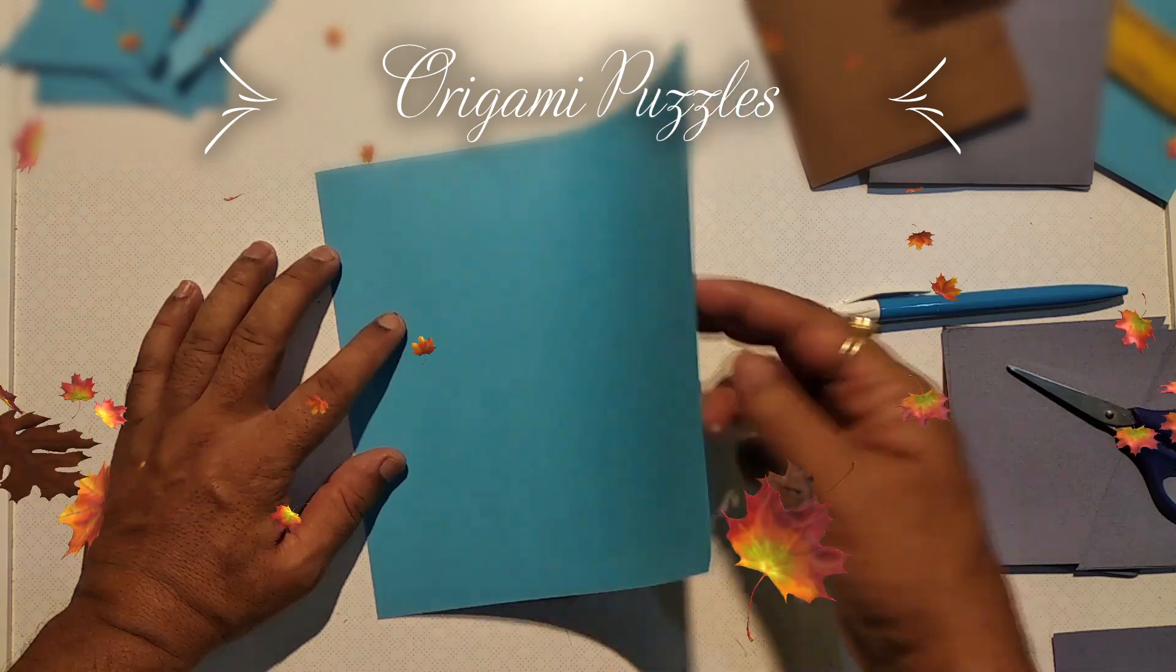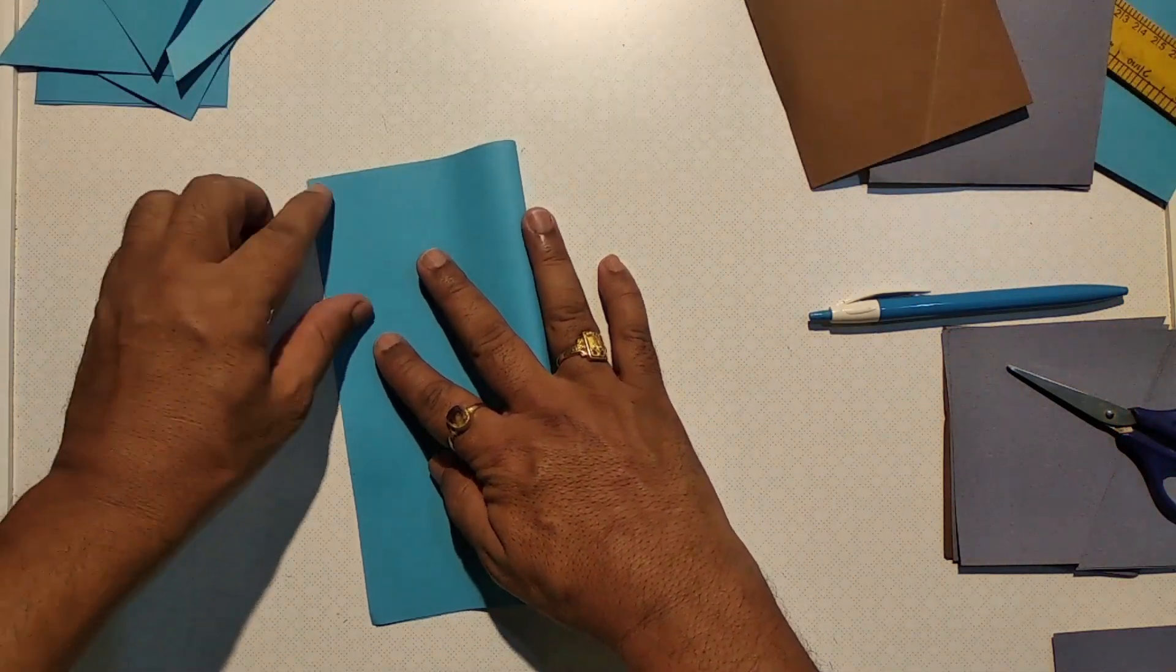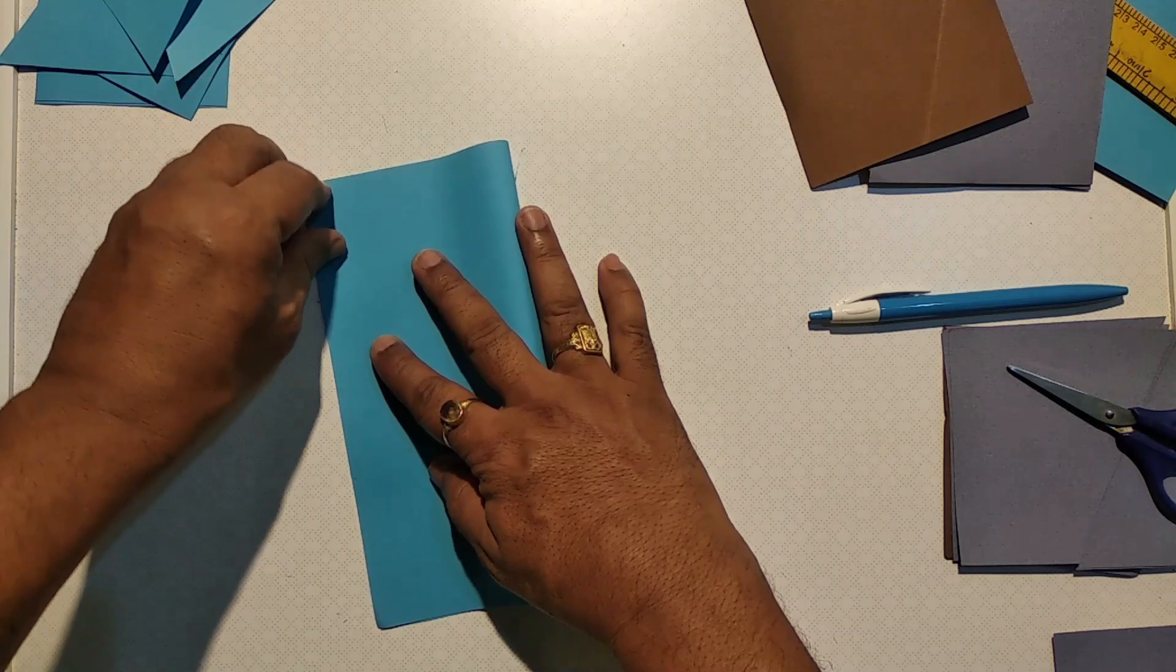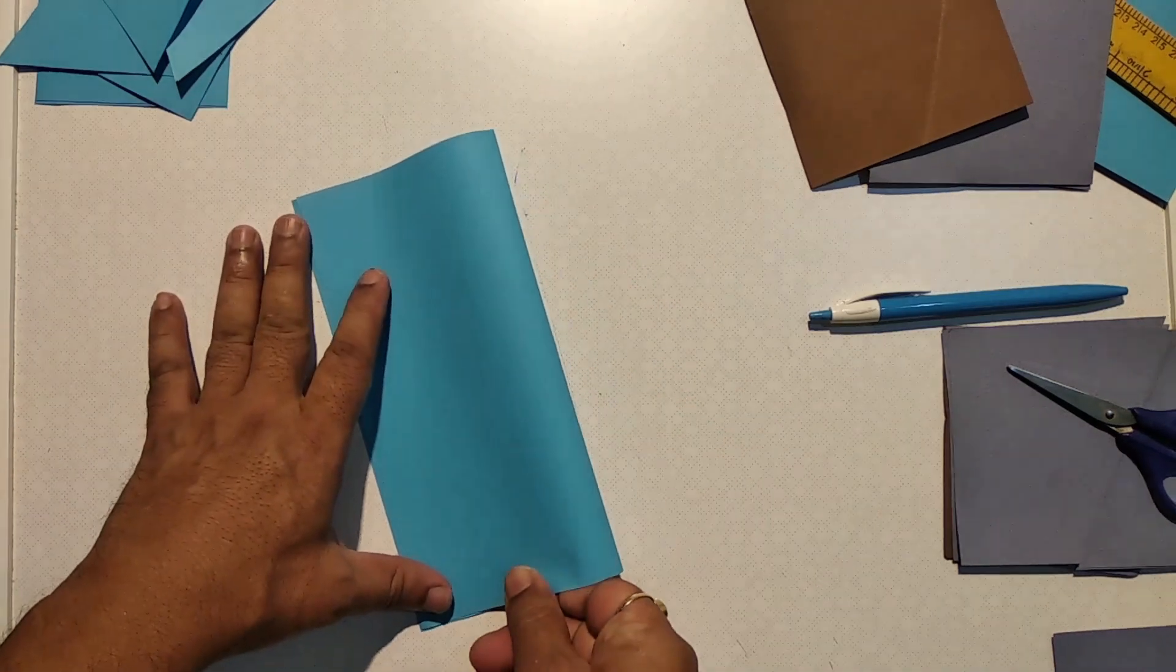Take a square piece of paper and identify the centers of all four sides as shown.